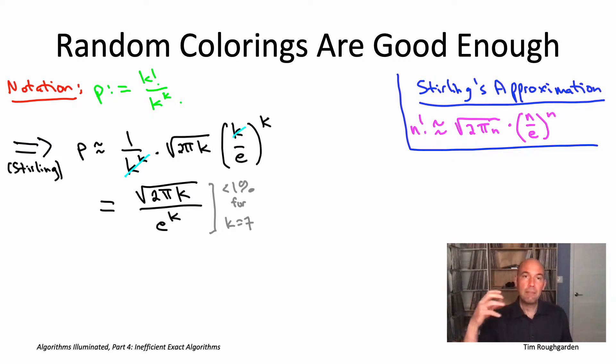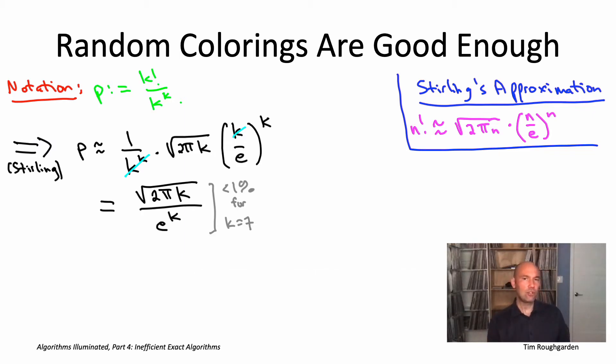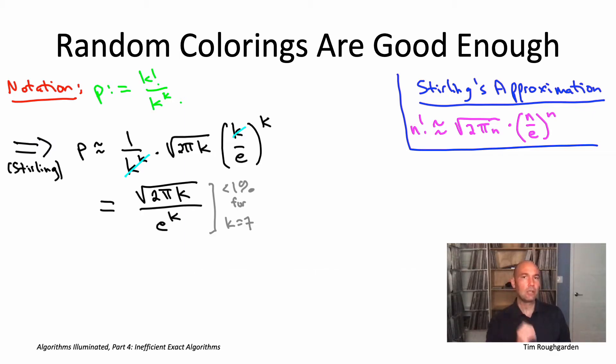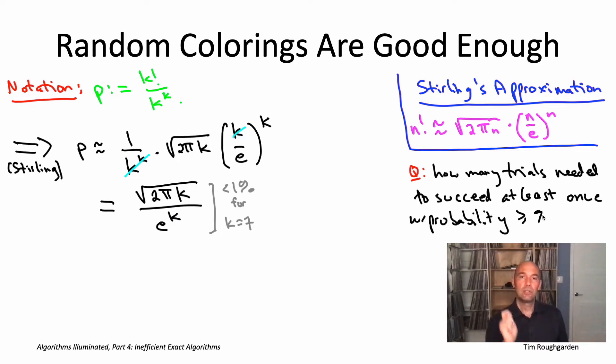Keep trying different colorings. Keep invoking our dynamic programming subroutine for computing the min-cost panchromatic path. And over all of our trials, we just remember the best of all of the panchromatic paths that we ever see. We only need to get lucky once. If even one of our random colorings winds up turning an optimal k-path panchromatic, our dynamic programming subroutine is guaranteed to find it. So the question is not so much what is the probability that a single experiment succeeds, the question is, how many trials do we need before we're going to succeed in at least one trial with probability at least, say, 99%.